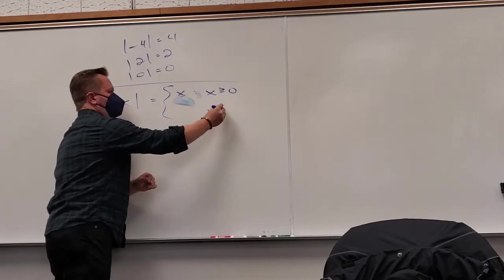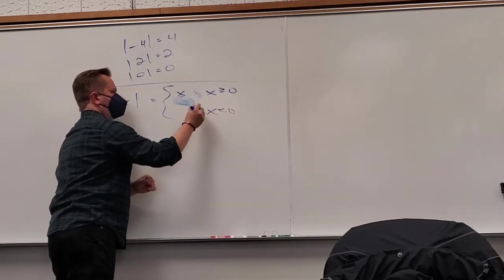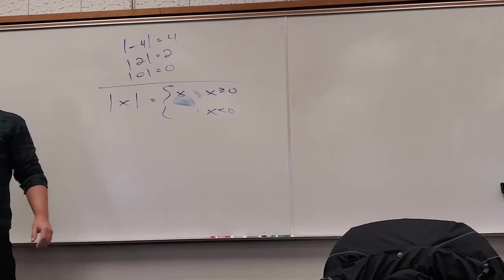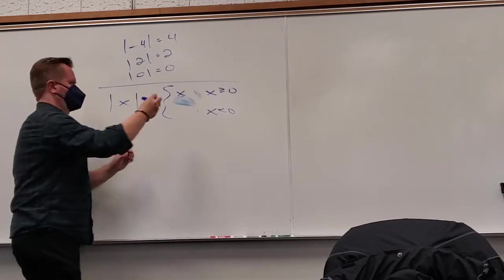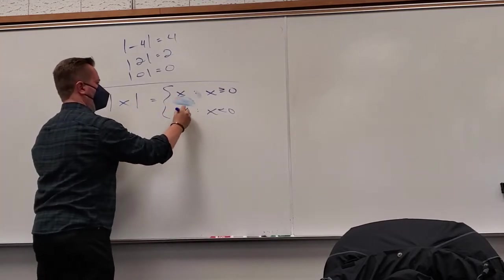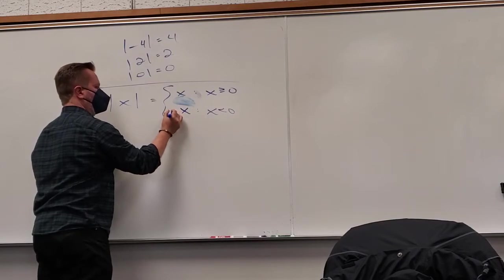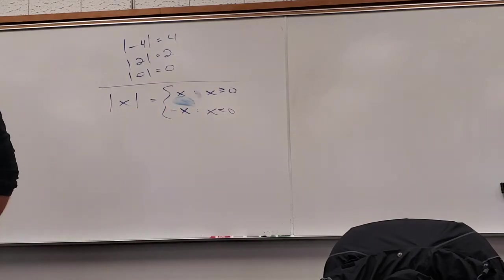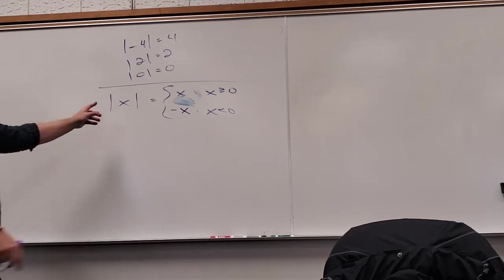What if it's negative? It changes the sign — and how do you change anything's sign? Multiply it by a negative. So the absolute value of x, when x < 0, equals −x.